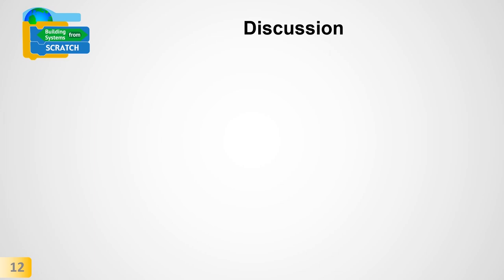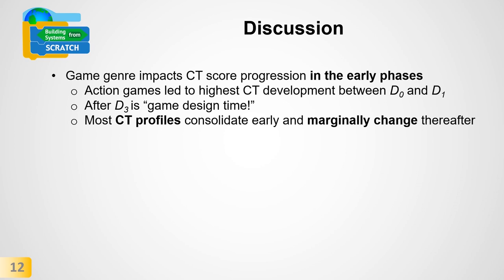We leave you with some points for discussion. Game genre impacts CT score progression already in early phases of game design — action games led to the highest CT development between Decile 0 and Decile 1, boosting CT within the first day of work. After Decile 3, it's essentially game design time. In our curriculum, students had 10 days to focus on game design, but their CT profiles consolidated early and only marginally changed thereafter. This suggests educators in game-based constructionist curricula should carefully monitor CT development right when students start, and ideally expose them to different game genres early so they can learn CT from different design perspectives.